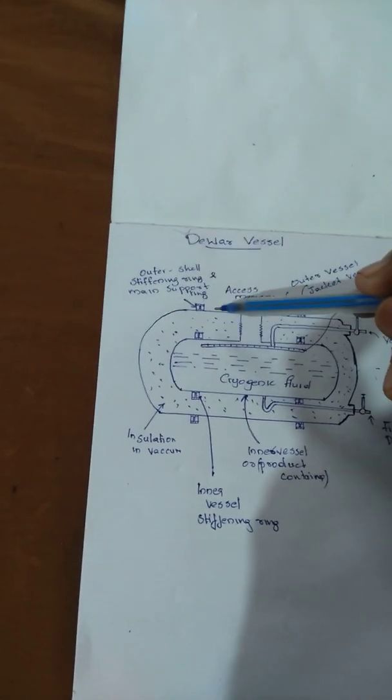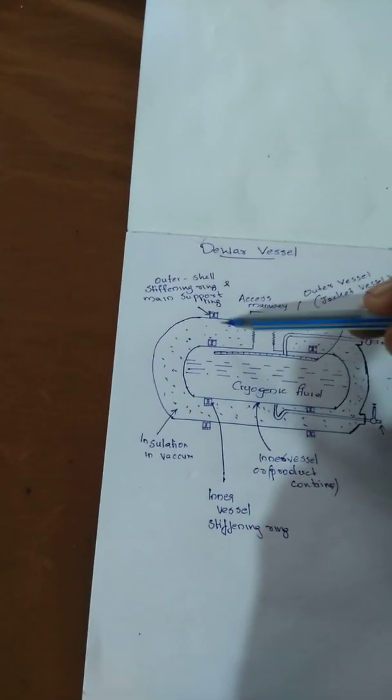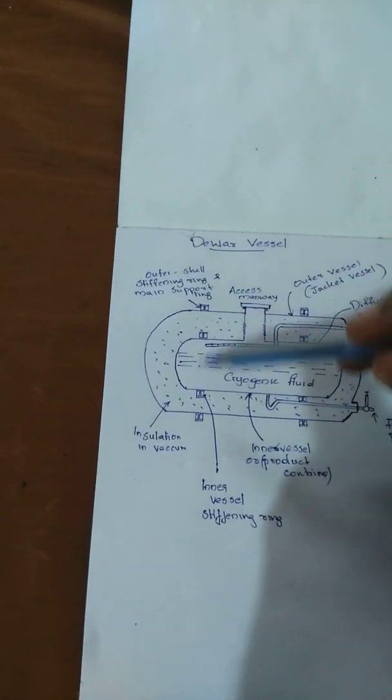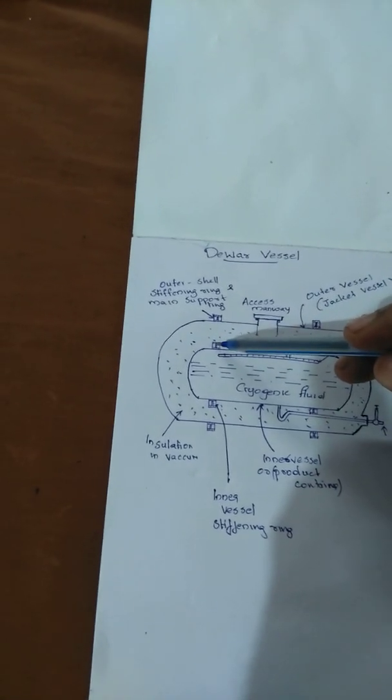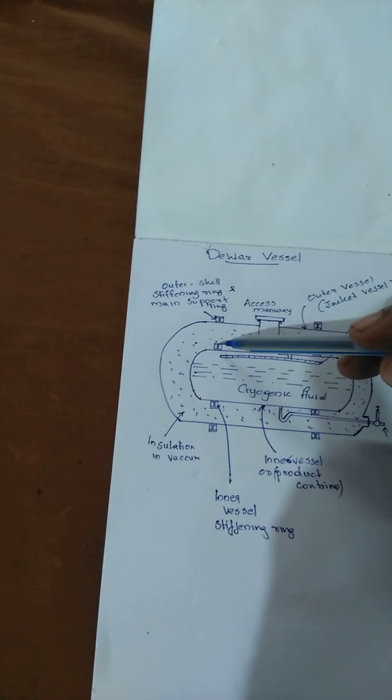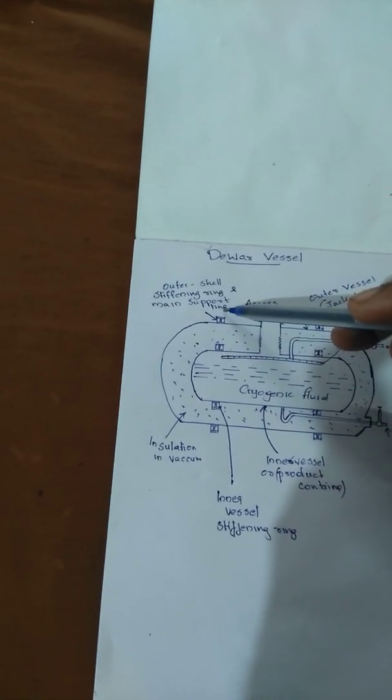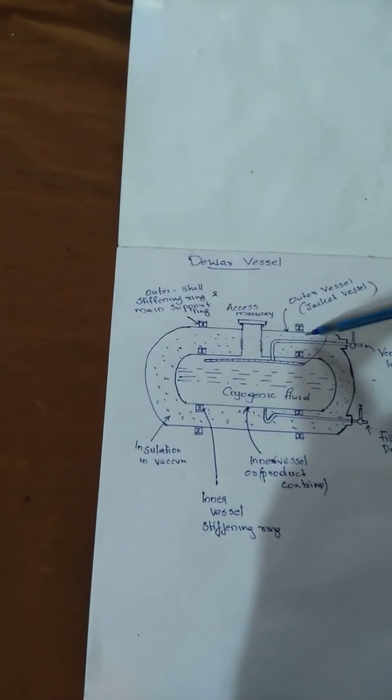These two vessels are connected to each other using support rings. There are eight support rings used on the four sides, and the one used on the inner side is called the inner vessel stiffening ring and on the outer side is called the outer shell stiffening ring. These outer stiffening rings hold the container together as a firm single piece.